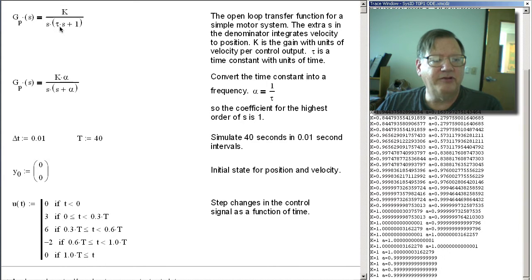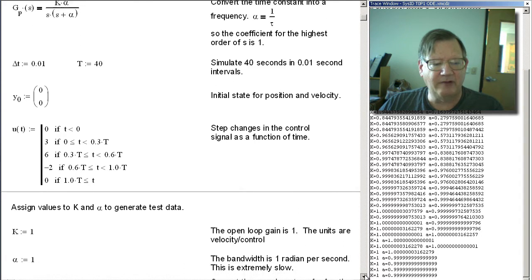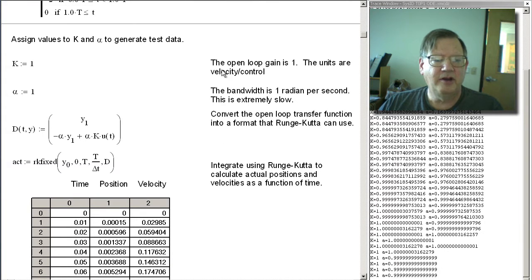And what I want to do is convert the time constant to a frequency by doing the substitution here. And then I want to simulate 40 seconds of motion. And basically what I'm going to be doing is I've got to simulate a motor. There's a gain that has units of velocity per control output, and then there's the frequency, which in this case is the corner frequency. Up here you would call it a time constant. And then I'm going to change the control output as a function of time and get a response. I'm going to assume the open-loop gain is 1 and the corner frequency, or bandwidth, is 1 radian per second.